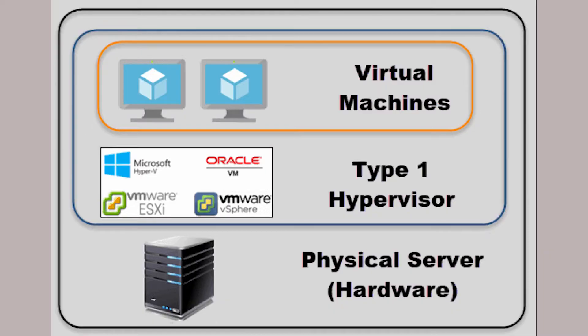In a Type 1 hypervisor, also known as a bare metal hypervisor, the virtualization software is installed directly onto the hardware. So instead of operating systems like Windows or Linux, you would install a virtualization software such as VMware ESXi or Microsoft Hyper-V. This makes Type 1 hypervisors much faster and more secure than Type 2 hypervisors.